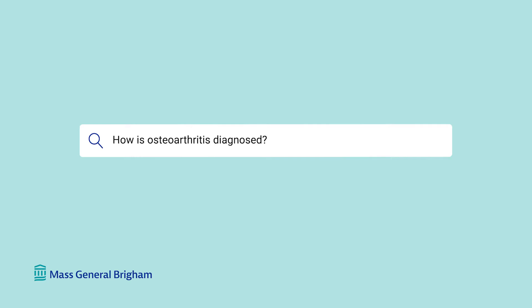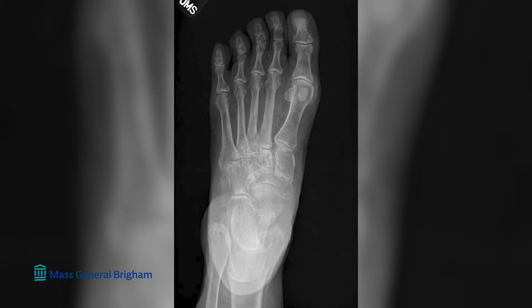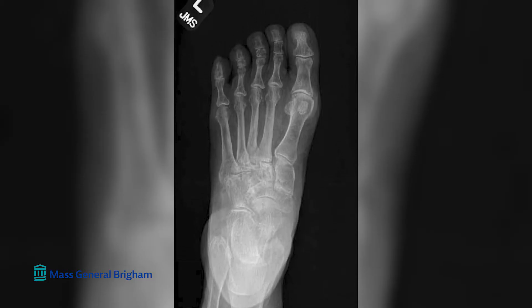How is osteoarthritis diagnosed? A physical examination will be performed as part of your office visit. The doctor will evaluate the joints that are particularly troublesome to you, and will keep in mind that these joints cause pain as they put your joints through range of motion and press on them to get an adequate assessment. X-rays can be used to support the diagnosis of osteoarthritis and to determine the degree of involvement of the joint.